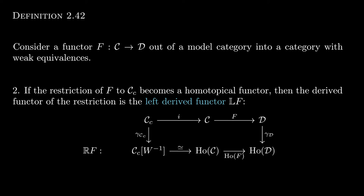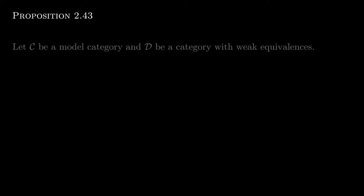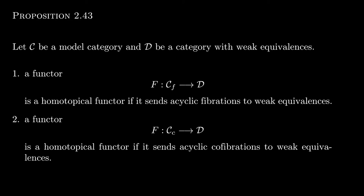You might not expect this to be useful unless it is easier to ascertain that a functor out of the full subcategory of fibrant or cofibrant objects is homotopical. This turns out to be the case, and this is called Ken Brown's Lemma. Suppose C is a model category and D is a category with weak equivalences. Then a functor out of CF is homotopical if it sends acyclic fibrations to weak equivalences. Dually, a functor out of CC is homotopical if it sends acyclic cofibrations to weak equivalences.